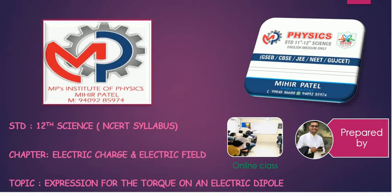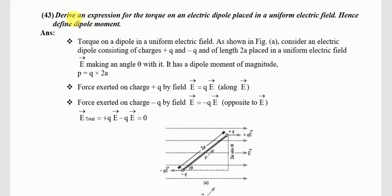Hello friends, this is Mihir Patel from MP's Institute of Physics. Welcome to the lecture series of the first chapter, Electric Charge and Electric Field, for 12th science. Today's topic is the expression for the torque on an electric dipole — we will discuss the concept of torque with respect to an electric dipole. The question is: derive an expression for the torque on an electric dipole placed in a uniform electric field, and hence define the dipole moment.